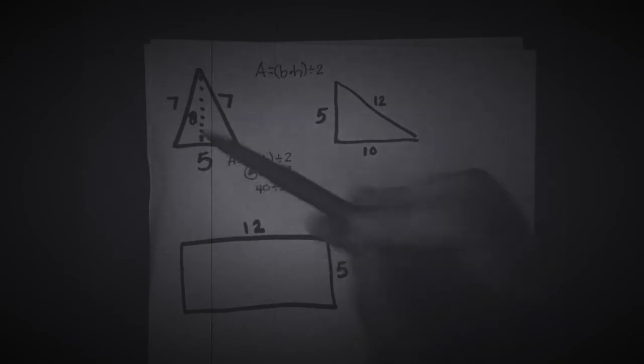Now when you have one that looks like this with that right angle, you're going to notice that there is no dotted line. That's because this 5 becomes our height. So same equation: area equals base times height divided by 2. So that's base is 10, so we have 10 times 5 divided by 2. We do 10 times 5 first, which is 50, divided by 2, which is 25.